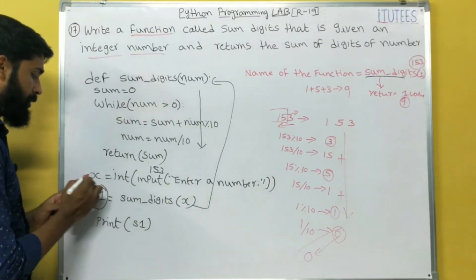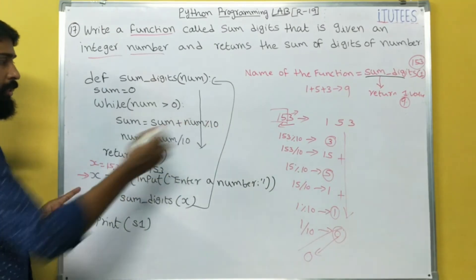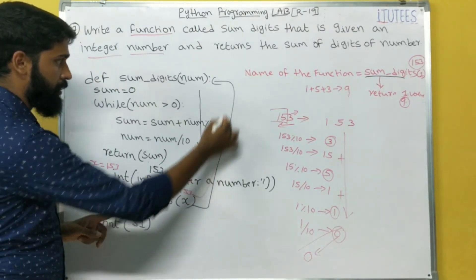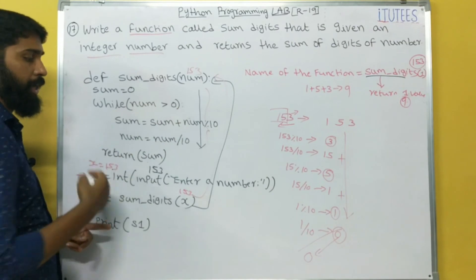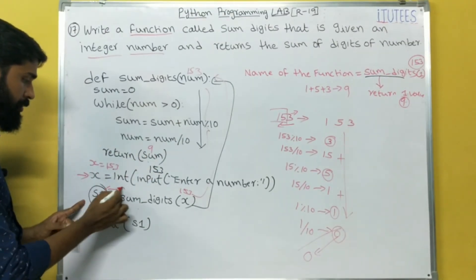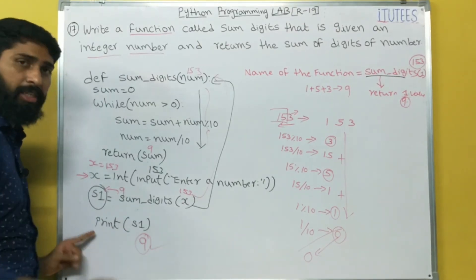So, that means the execution is starting from here. For example, x equals to in this case 153. So, sum_digits 153. The function is called, num equals to 153. So, I will let you discuss that what happened. Sum equals to 9. That is returned. That is assigned to s1. So, print s1. It prints 9. That's it.